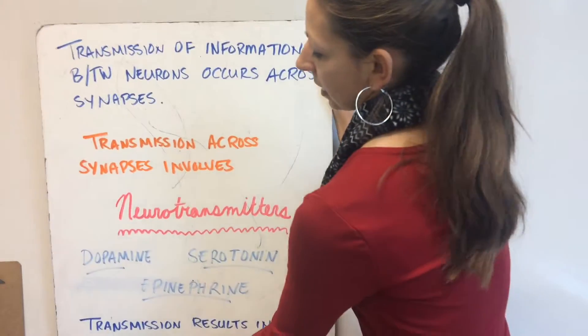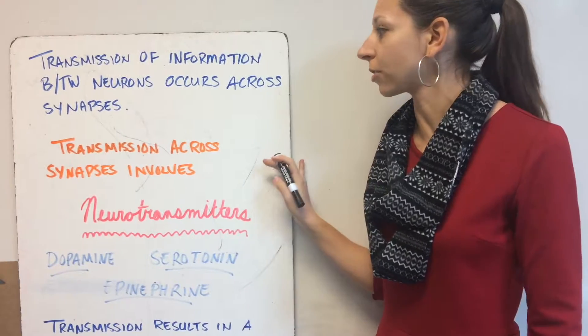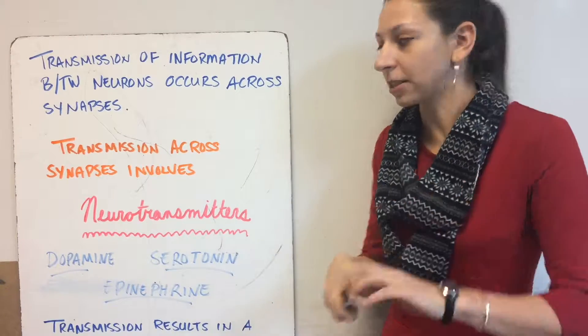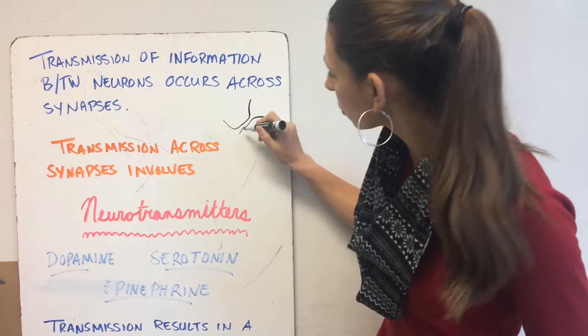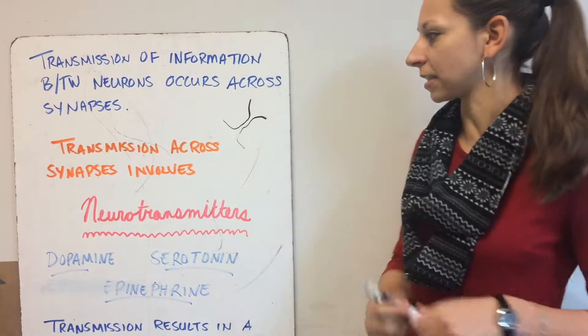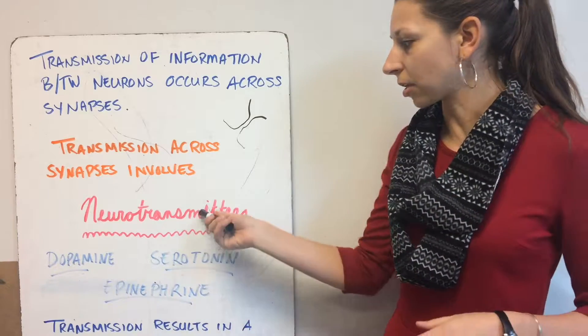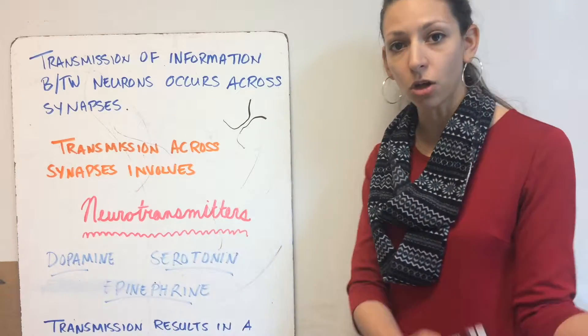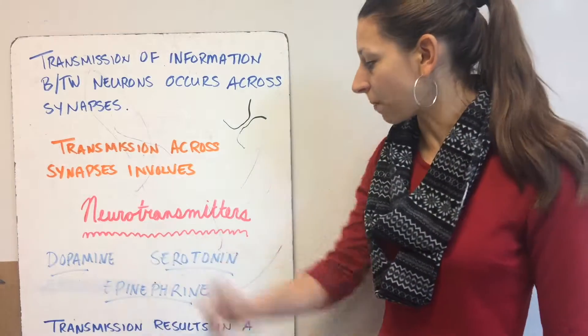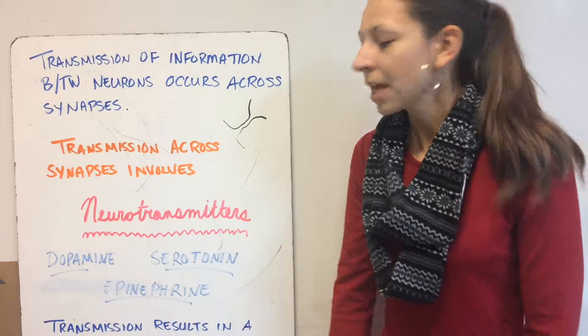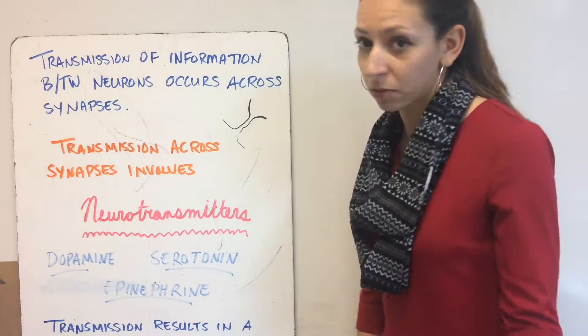The transmission of information between neurons occurs across synapses, special gaps between two neurons. The transmission across synapses involves special chemicals we call neurotransmitters. I'm sure you've heard of some of these before: dopamine, serotonin, and epinephrine. If their receptors are blocked, sometimes we have different responses in the body. That's what some drugs do.